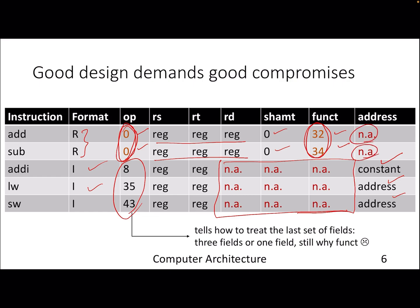So depending on the opcode field, the processor will know how to treat these last three fields, whether it will be a single field denoting a constant or address, or it's a combination of three fields denoting a register, a bit of shift amount, and some functionality.